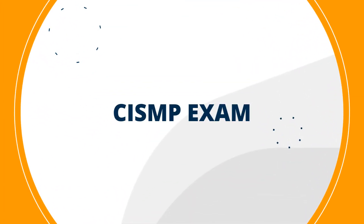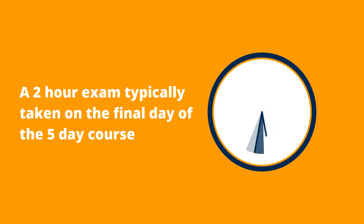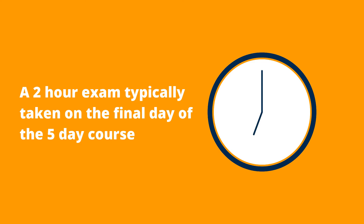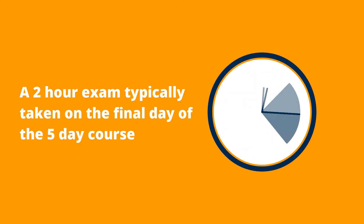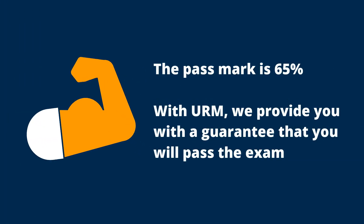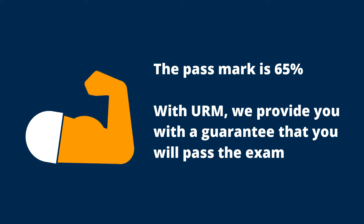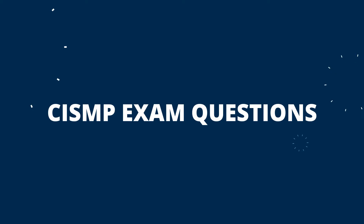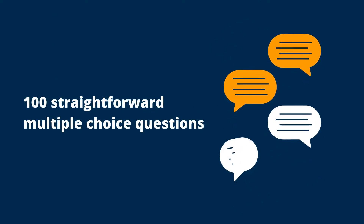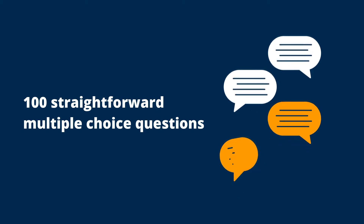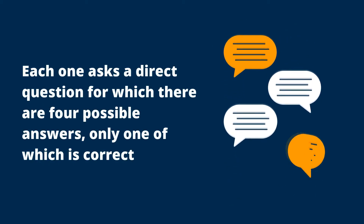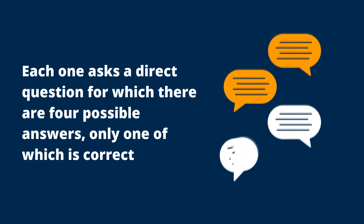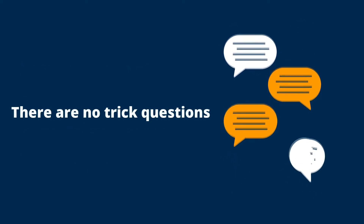CISMP exam: to gain the qualification, you are required to take a closed-book exam which is made up of 100 multiple-choice questions. It is a two-hour exam, which is typically taken on the final day of the five-day course. The pass mark is 65%. With URM, we provide you with a guarantee that you will pass the exam. The 100 questions are straightforward multiple-choice questions — each one asks a direct question for which there are four possible answers, only one of which is correct. There are no trick questions.